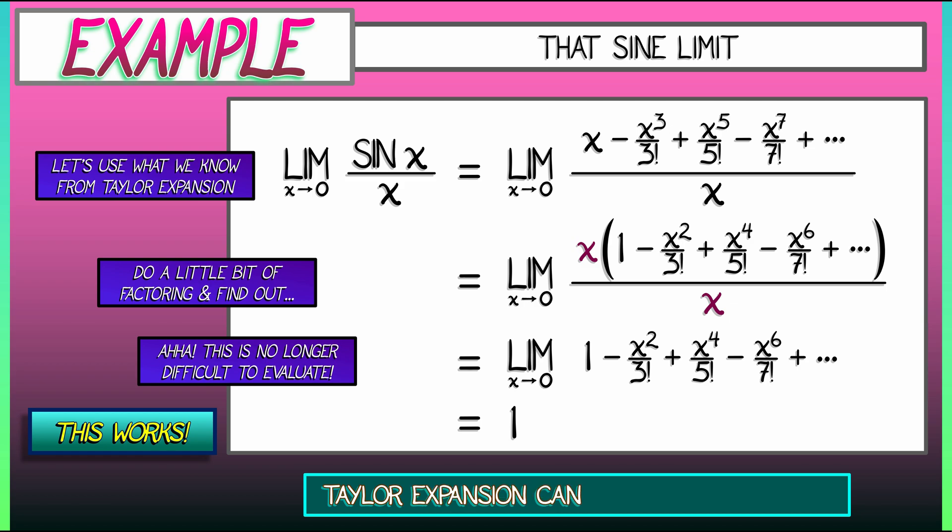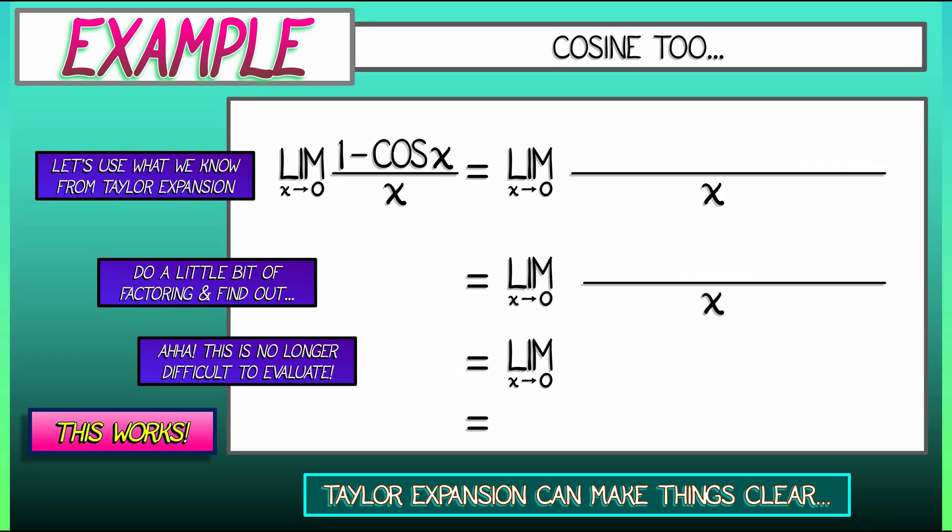Taylor expanding about this point really reveals why the limit as x goes to zero of sine x over x equals 1. But that's not the only example that this works on. What about that cosine example? Let's replace that numerator, sine of x, with 1 minus cosine of x.